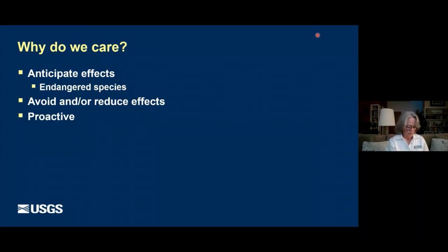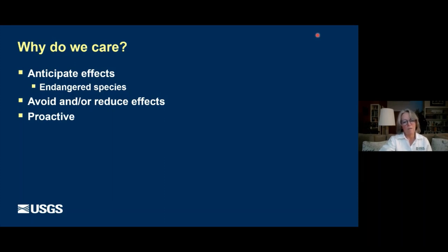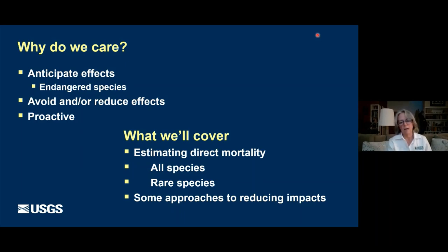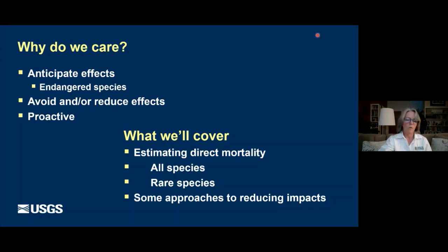Turbines can have mortality impact. Why do we care? Well, first, we care because we're dealing with species that perhaps are endangered. We want to reduce and anticipate those effects. In particular, we want to be proactive so that we don't find ourselves in the position of the hydro industry, needing to refit or even remove dams to preserve salmon. Tonight I'm going to talk about my work, which primarily is in the statistics side — estimating the direct mortality of birds and bats at wind power facilities, as well as rare species.